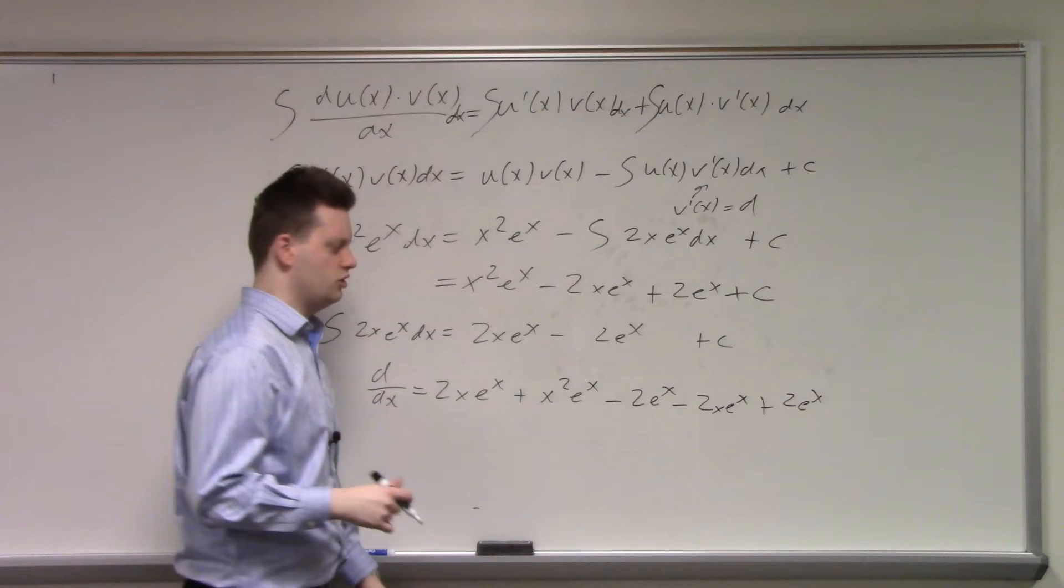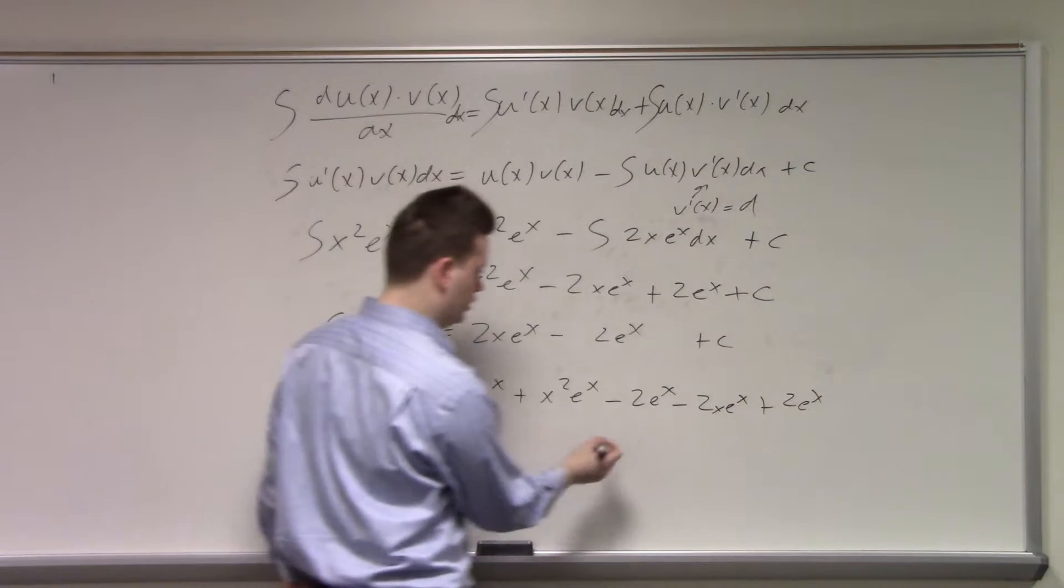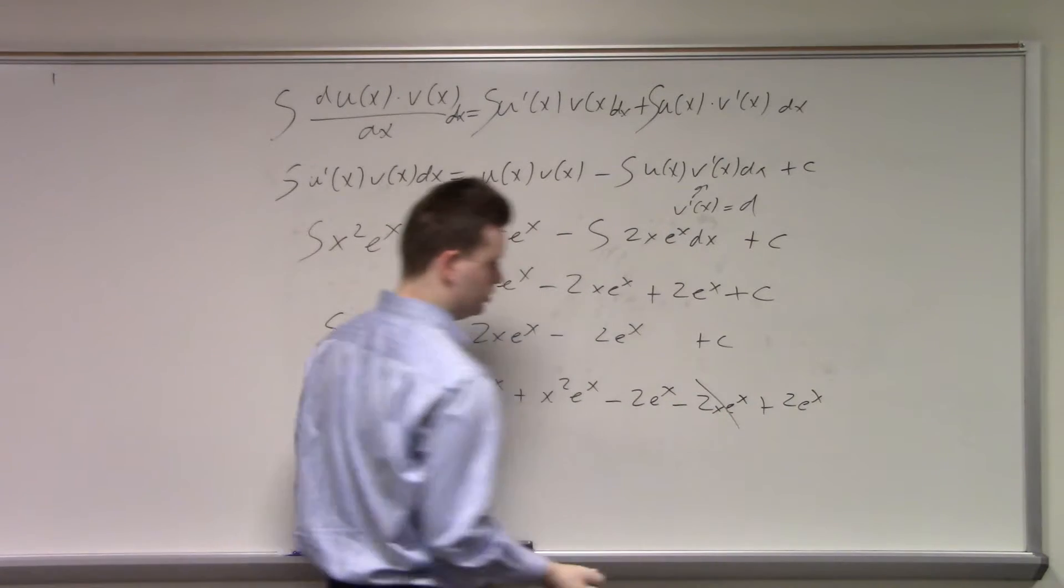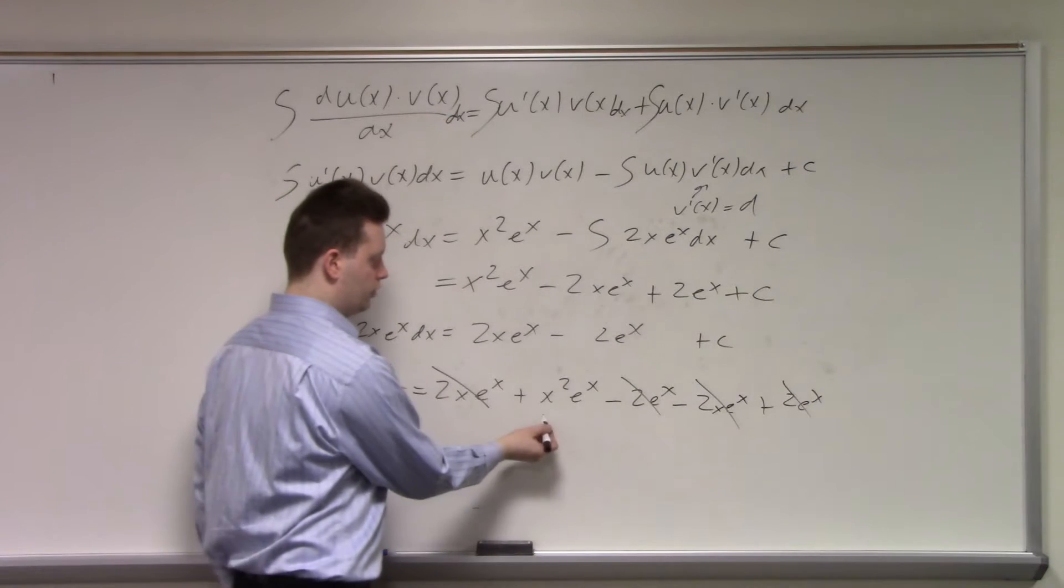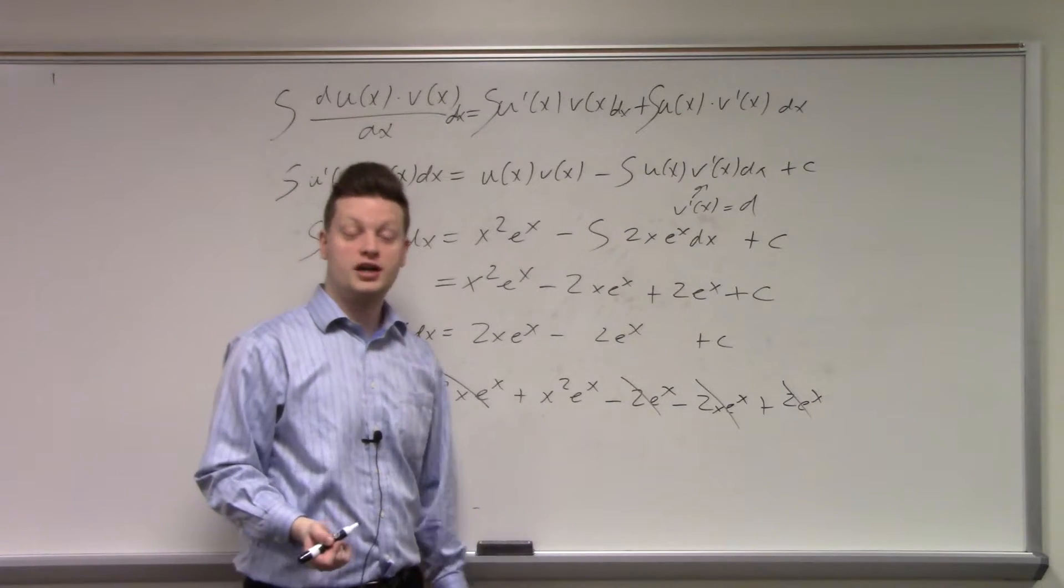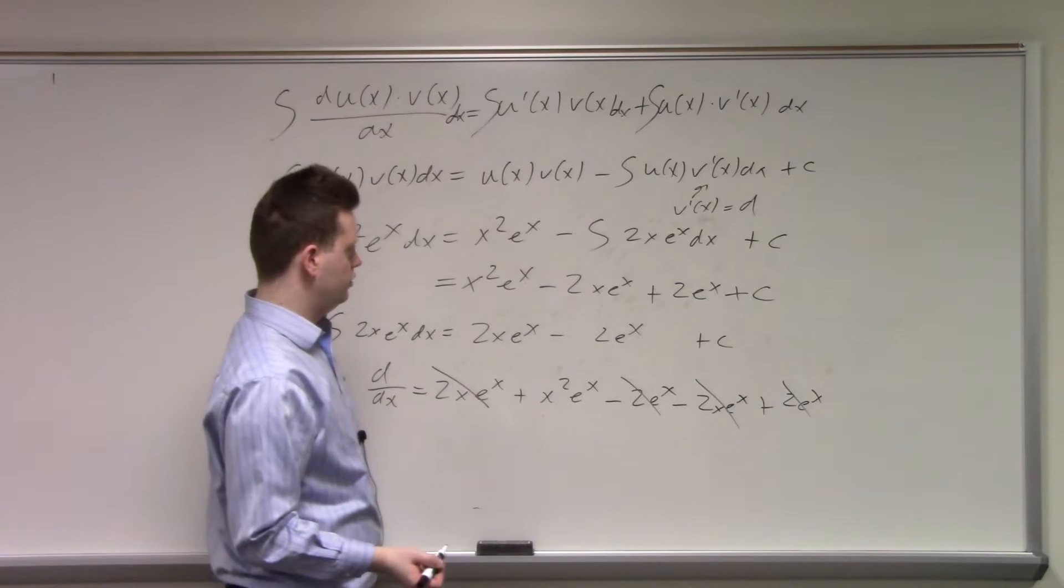That's five terms, not one. Well, but a lot of them cancel out. 2x e^x minus 2x e^x, minus 2 e^x plus 2 e^x, and we're left with x² times e^x. So we found a solution.